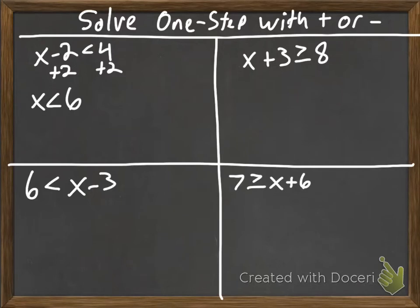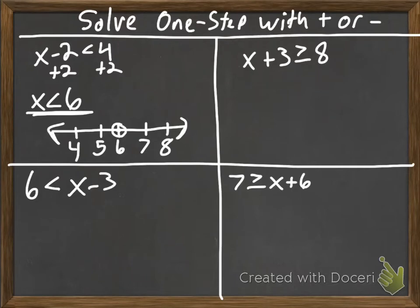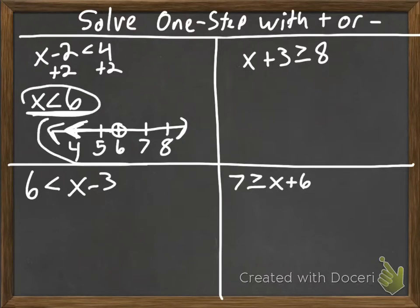Now we're going to make a number line. The best way to do that is to mark your number line with the key number in the middle, then go two numbers bigger and two numbers smaller. It's x less than 6 — a less than symbol uses an open dot, so we put an open dot on 6. Everything to the left is less than 6, so we draw an arrow going left from the dot. That's how we represent our answer — with the inequality and the graph.